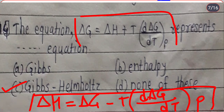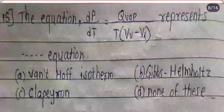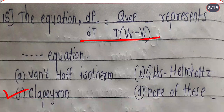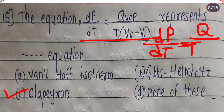The next equation: dP/dT = Q_vap / (T(V_V − V_L)) represents which equation? Options include Van't Hoff isotherm, Gibbs-Helmholtz, Clausius-Clapeyron, and none of these. The correct option is C — this equation represents the Clapeyron equation, also written as dP/dT = Q / (T(V₂ − V₁)).